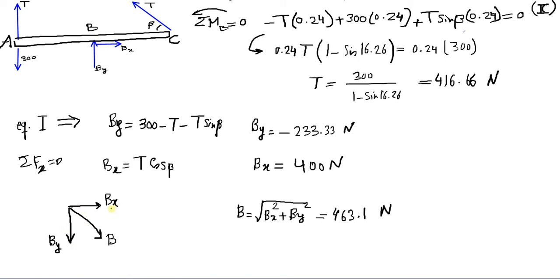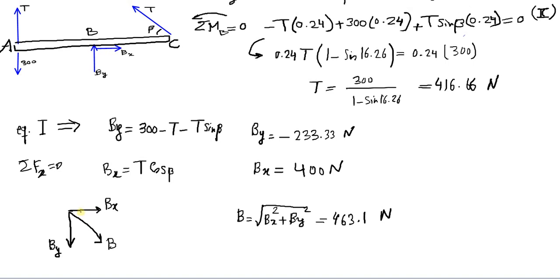Since By is negative 233.33 Newtons, it is directed downward, so I correct my assumption. The reaction force magnitude is the square root of Bx squared plus By squared, giving 463.1 Newtons. The angle alpha of the reaction force direction is arctan(By over Bx).